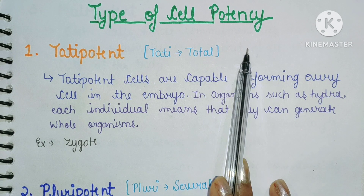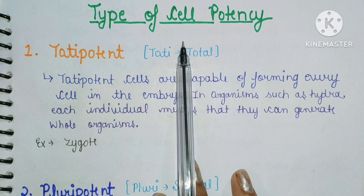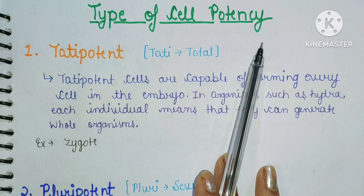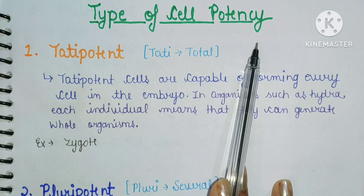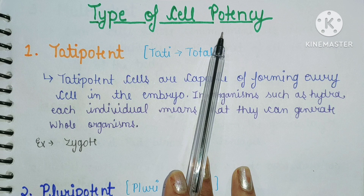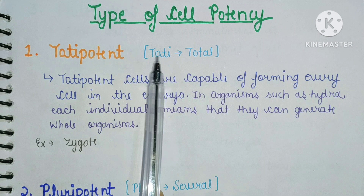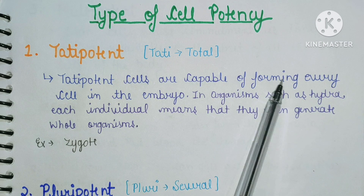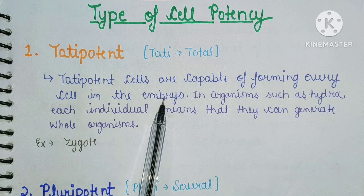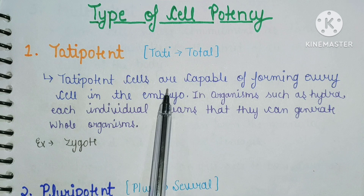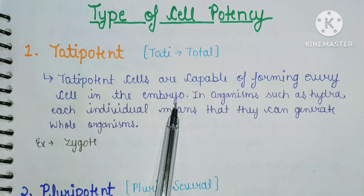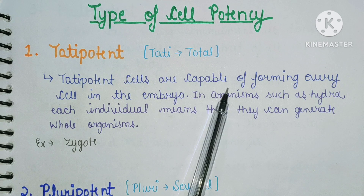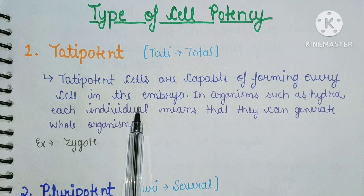There are four types of cell potency. The first type is totipotent. Totipotent cells are capable of forming every cell in the embryo. In organisms such as hydra, each individual part can generate a whole organism. So totipotent cells have the capability to create an entire embryo.